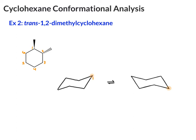So carbon 1 — since our original ring was numbered clockwise, number the chair clockwise. And we'll number our other chair clockwise. Now let's put in our substituents, and they're both methyl groups. So on carbon 1 we have a CH3, and on carbon 2 we have a CH3.